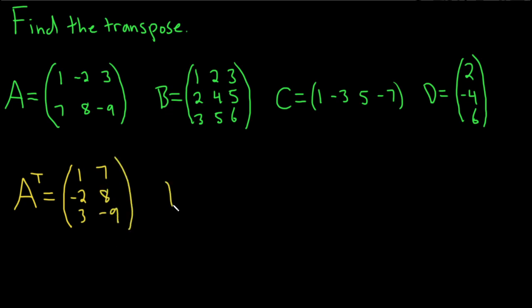Let's do this one, B transpose. So again, we take each row and turn it into a column. Take the first row, 1, 2, 3, and it becomes the first column: 1, 2, 3. Take the second row, 2, 4, 5. It becomes the second column: 2, 4, 5. Take the third row, 3, 5, 6. It becomes the third column: 3, 5, 6.